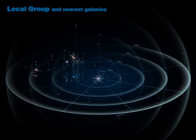This results in a peculiar motion of approximately 185 km s-1 toward the cluster. A second component is directed away from the center of the local void.